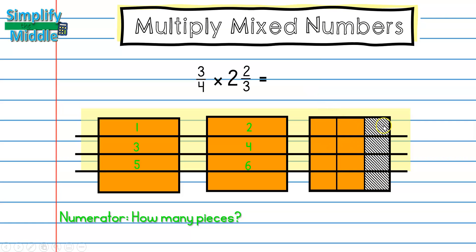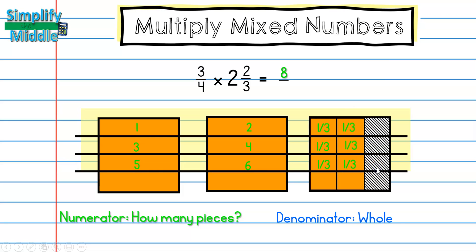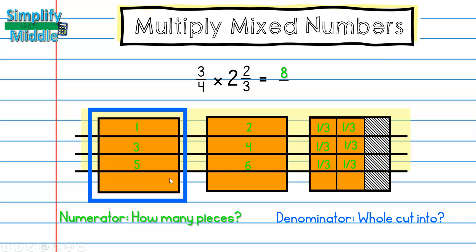If I were to make three of these individual pieces, it would be the same size as this one, so these are each worth one-third. I count six pieces here, plus these all put together equal one, and these all put together equal one — so six, seven, eight. I have eight pieces. My denominator is what my whole was cut into, which is fourths.